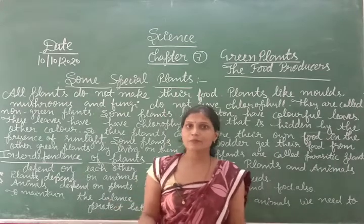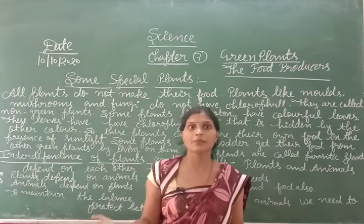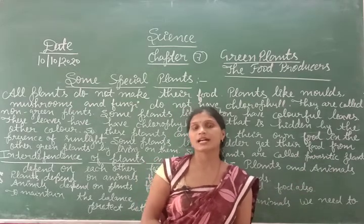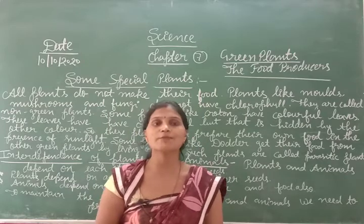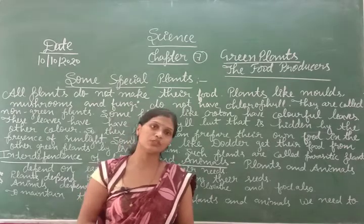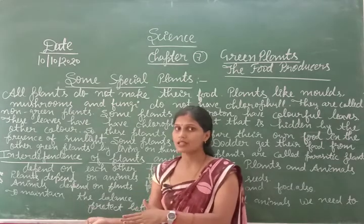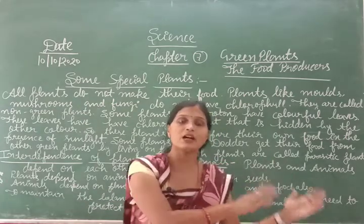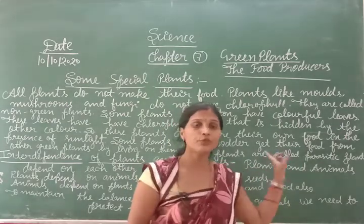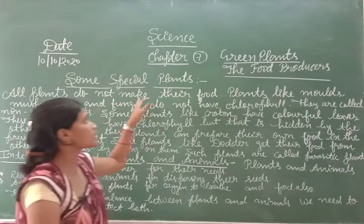But does every plant make its own food? No. Some plants do not make their own food because they depend on another plant. So plants are categorized into autotrophs and heterotrophs. Autotrophs are plants that make their own food, while heterotrophs are plants that do not make their own food and depend on another plant.